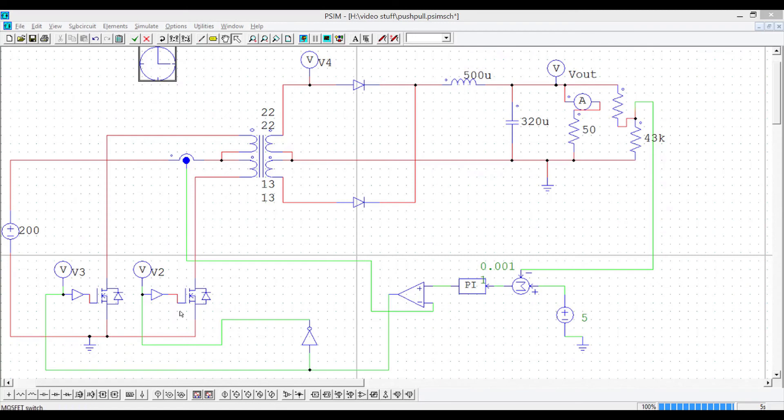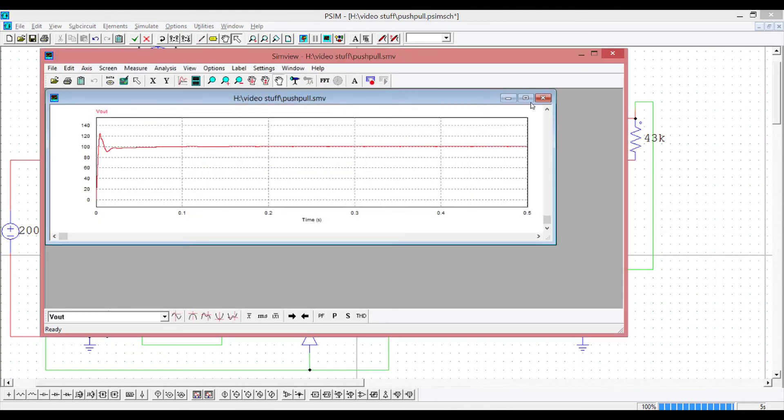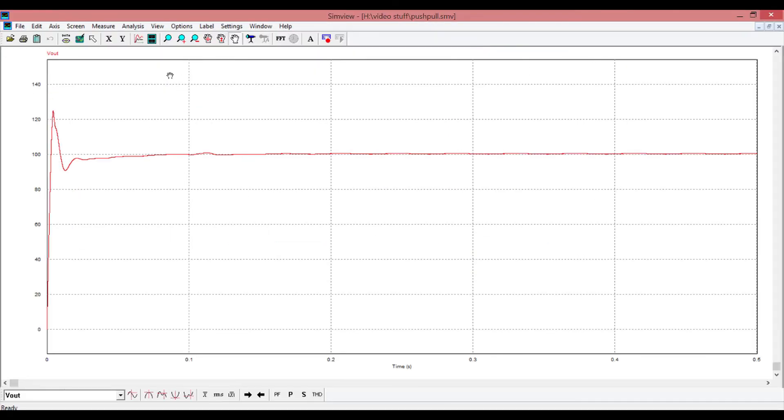Here input is 200 volts according to the statement. All components are connected according to topology. This is feedback loop with PI control for regulation of output. Now let's see the output of this. Here you can see output is 100 volts, that is as expected from our statement. So this is all about the design of push-pull converter.